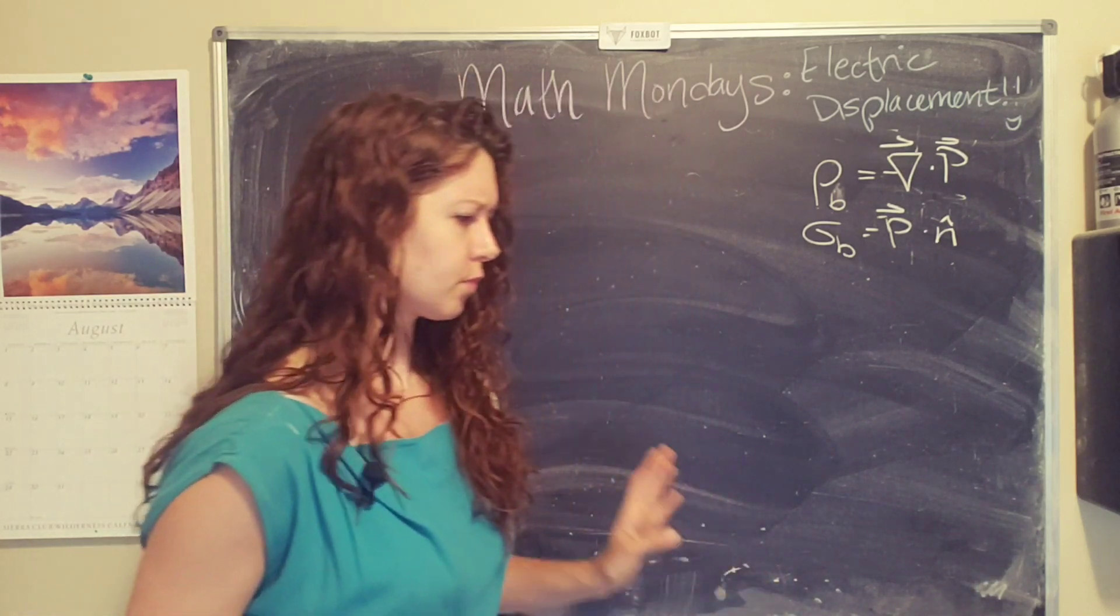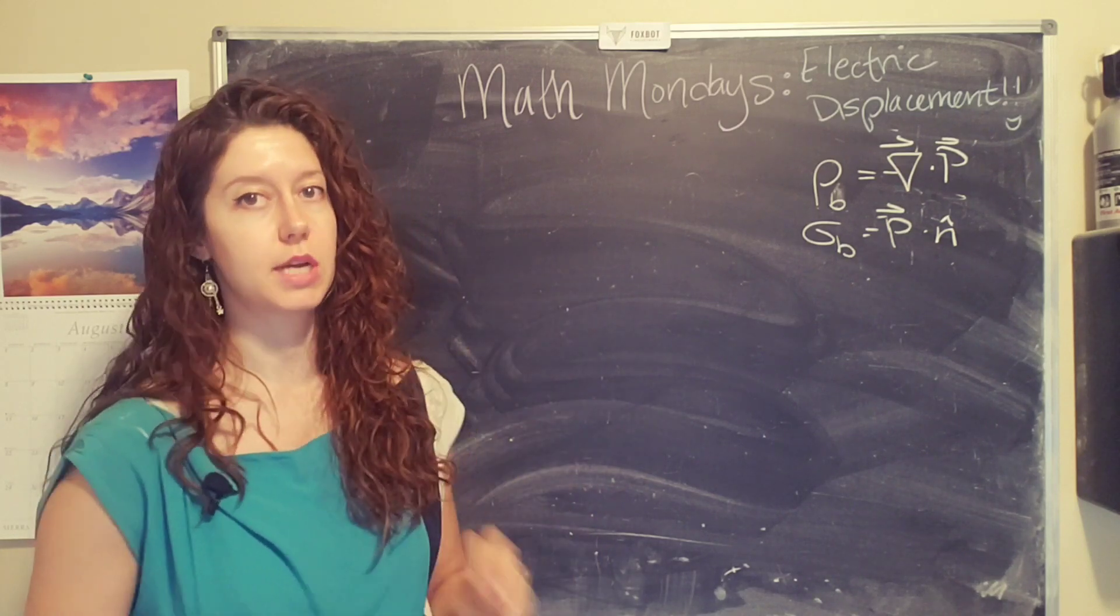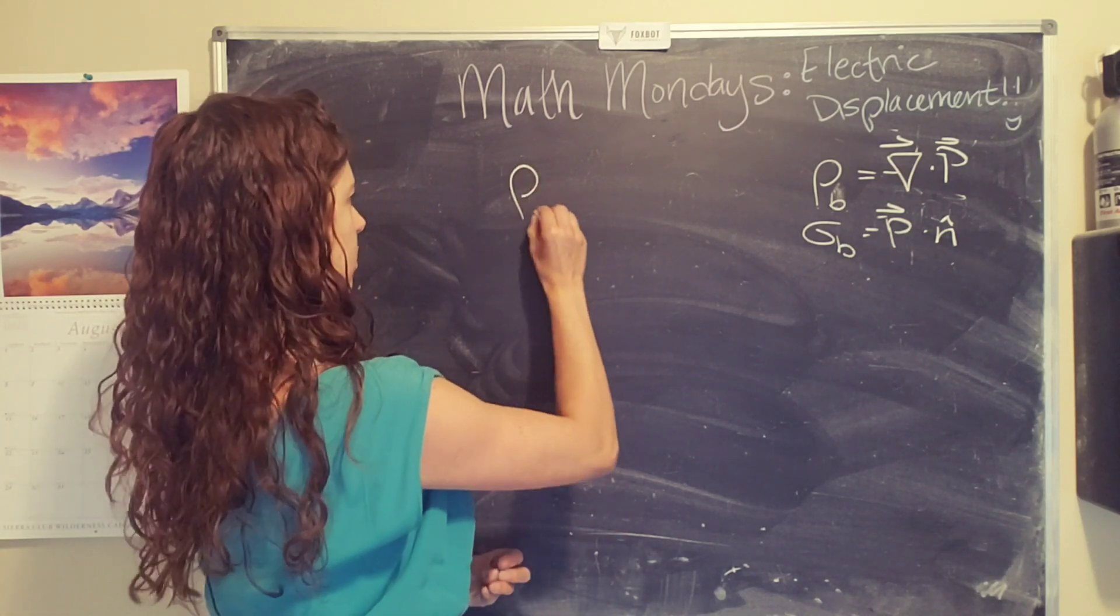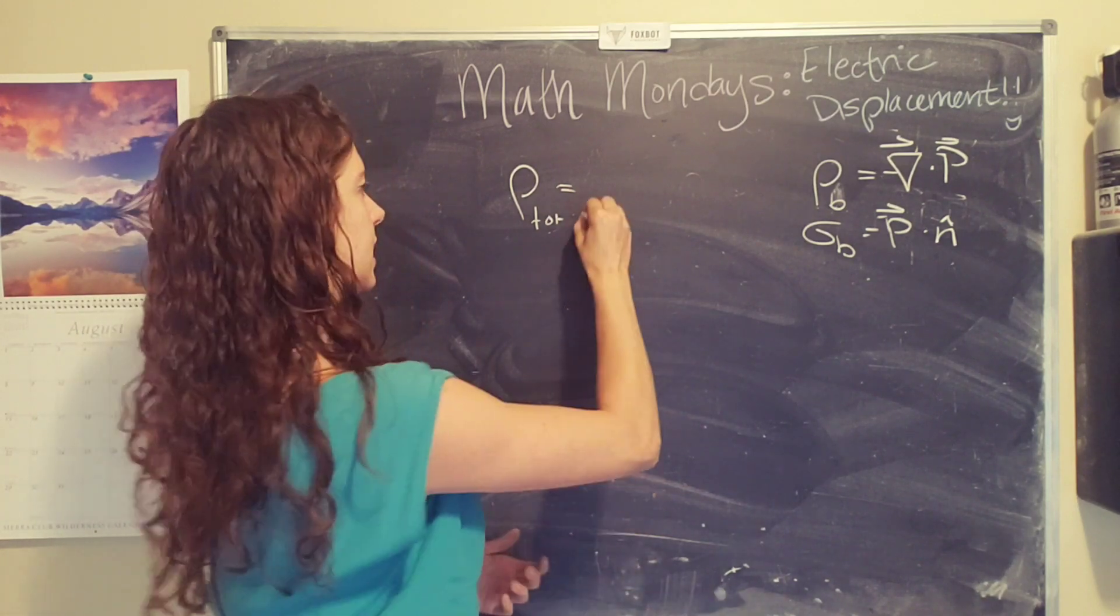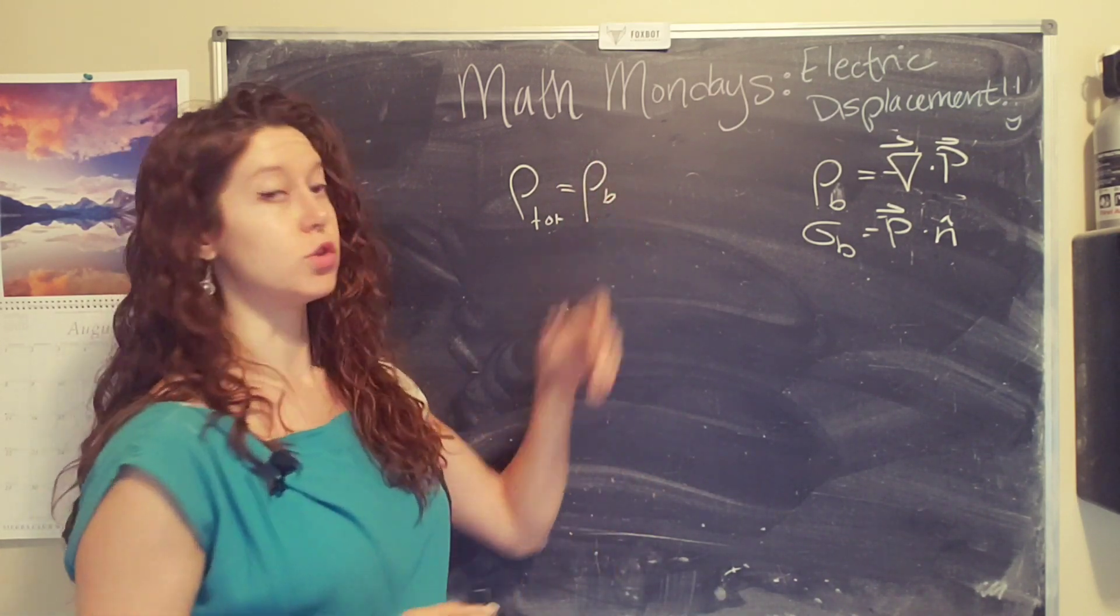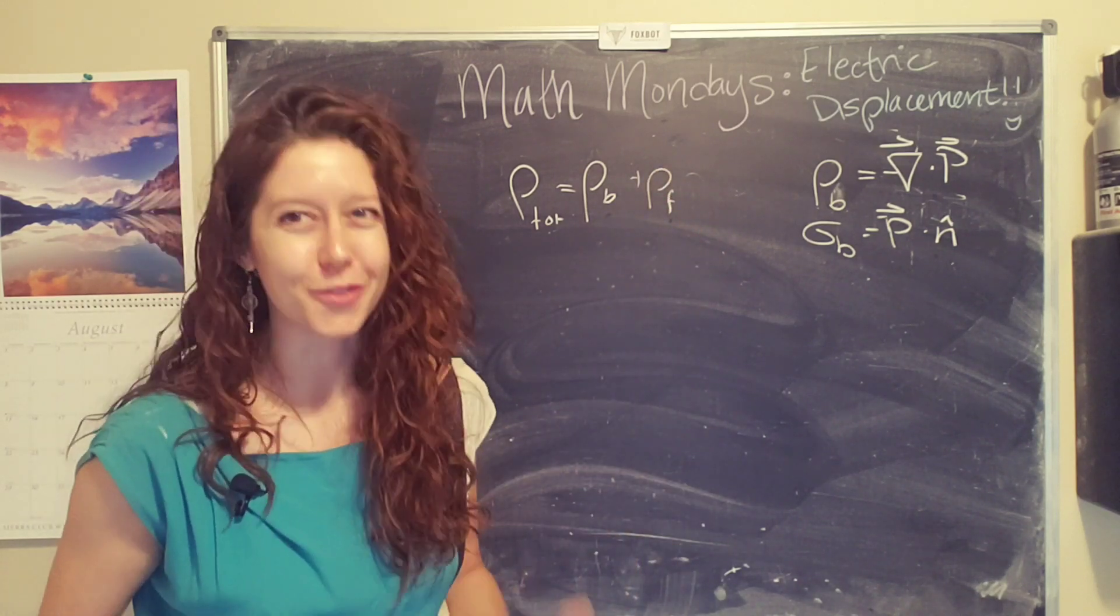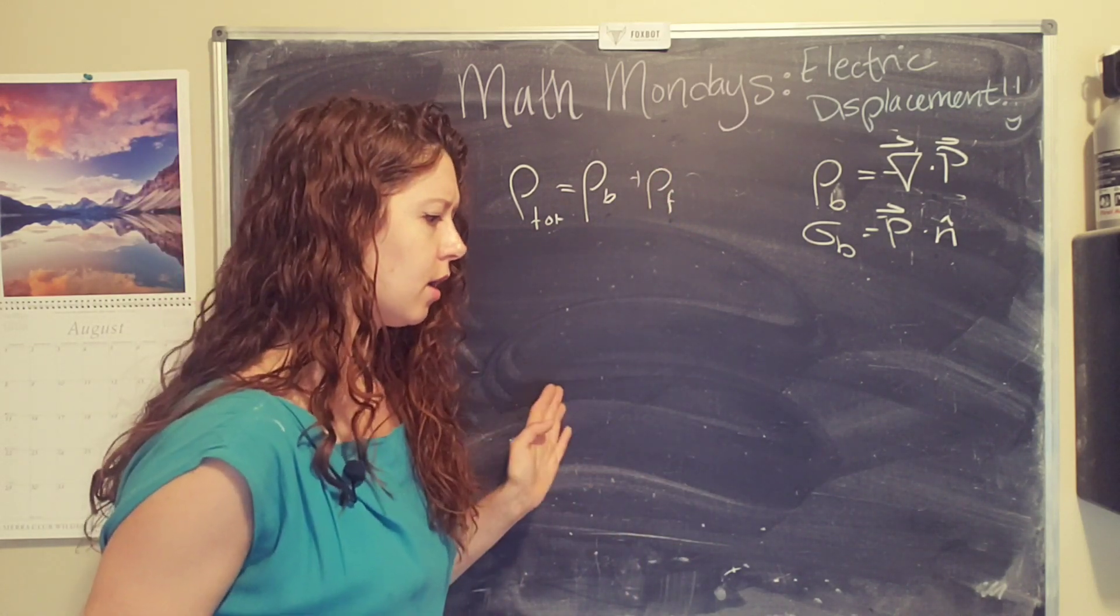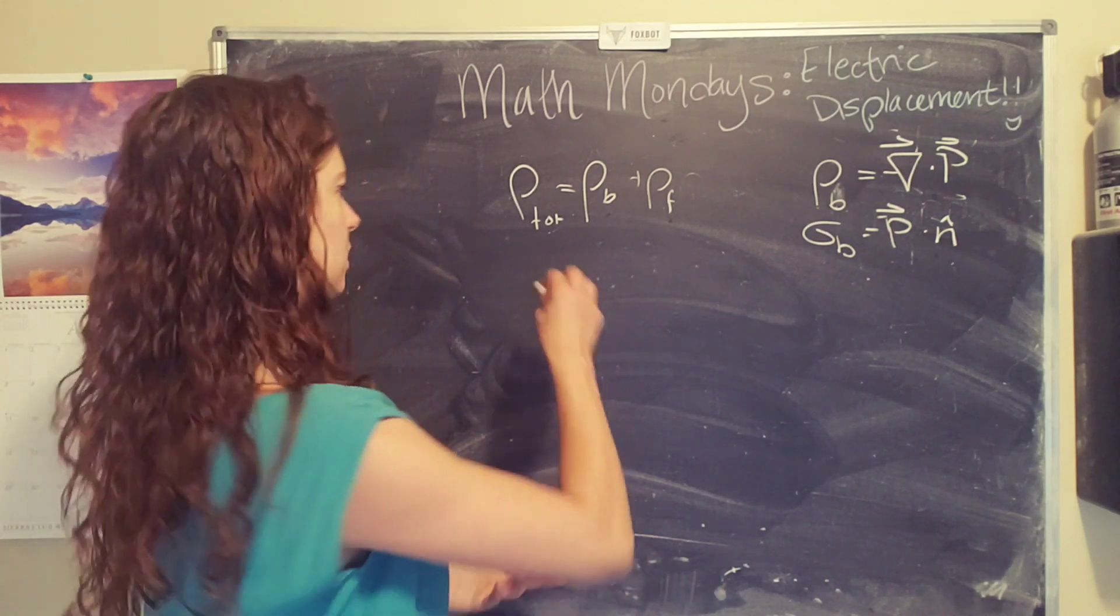Basically, we have a situation where we have two different types of charge densities. So the total charge density can be summarized as the charge density due to the bound charges, and the charge density due to everything else, or the free charges. And so then we can start to say, okay, well, how does this affect Gauss's law?